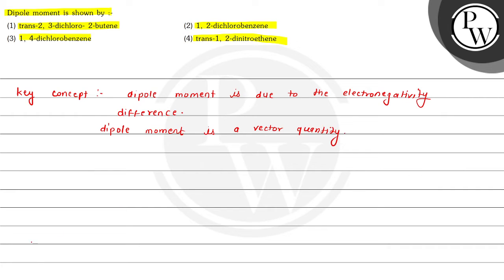Firstly we will draw the structure of these given compounds. The first is trans-2,3-dichloro-2-butene. Here chlorine is attached at the trans position on the double bond.